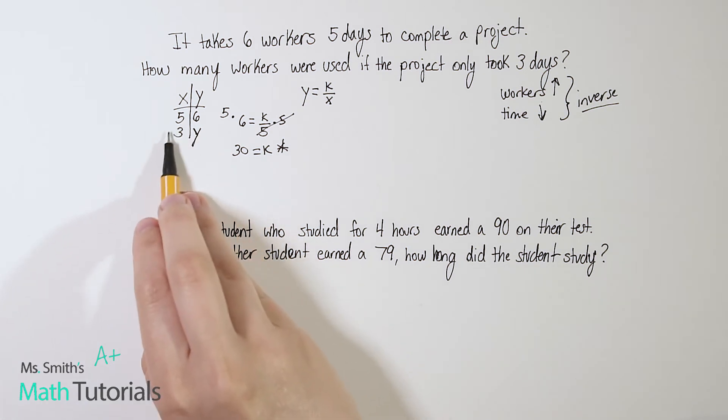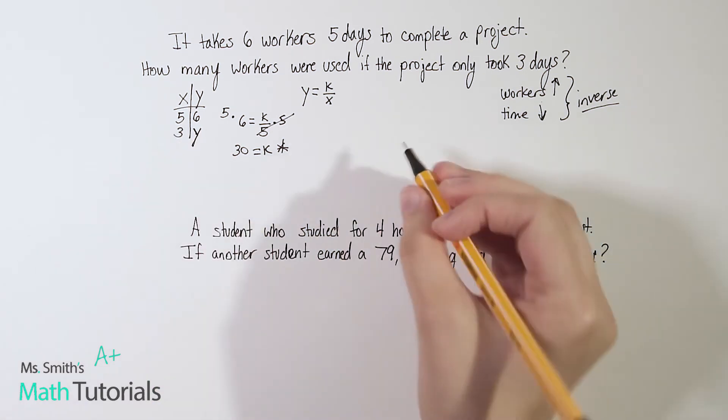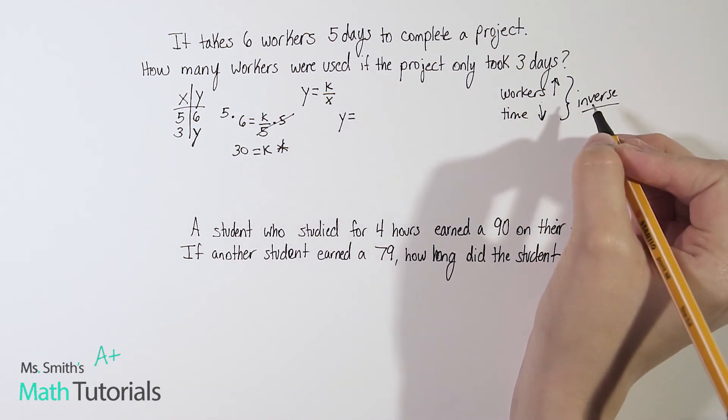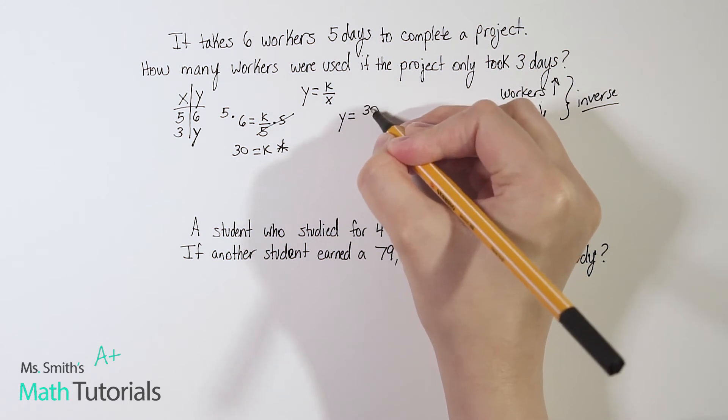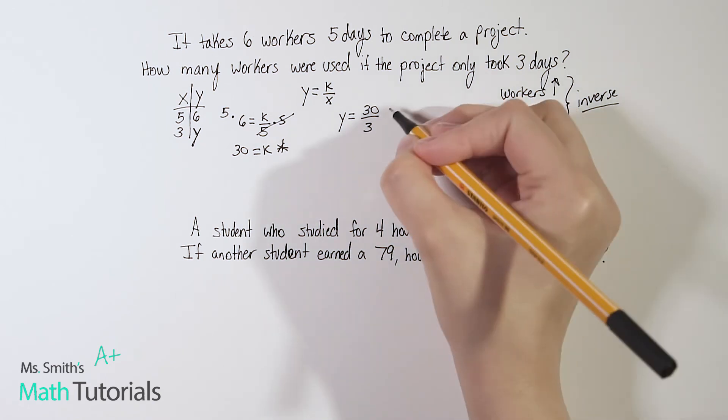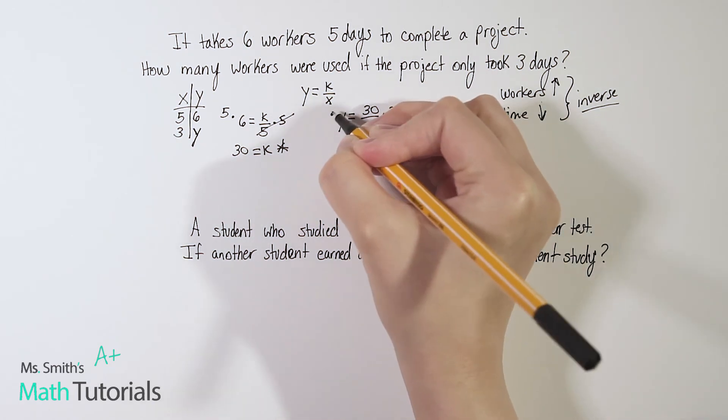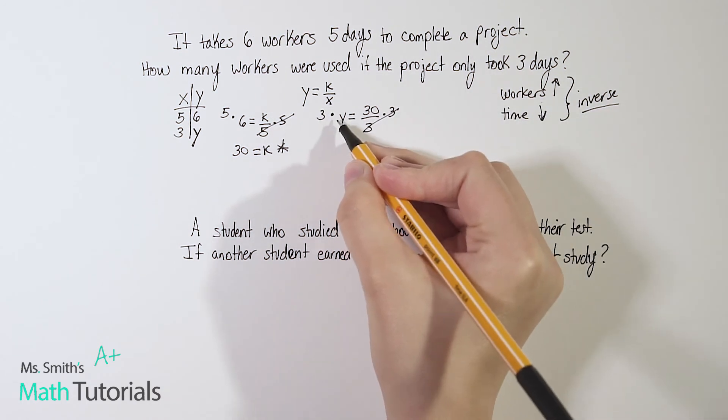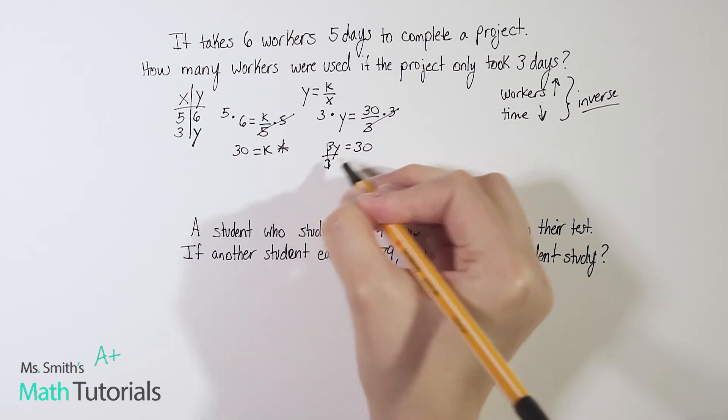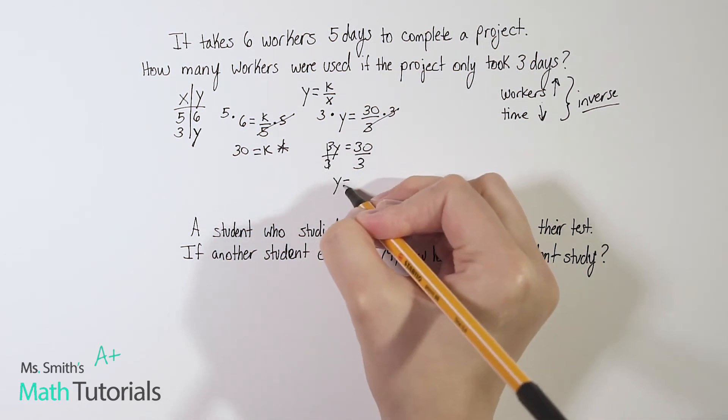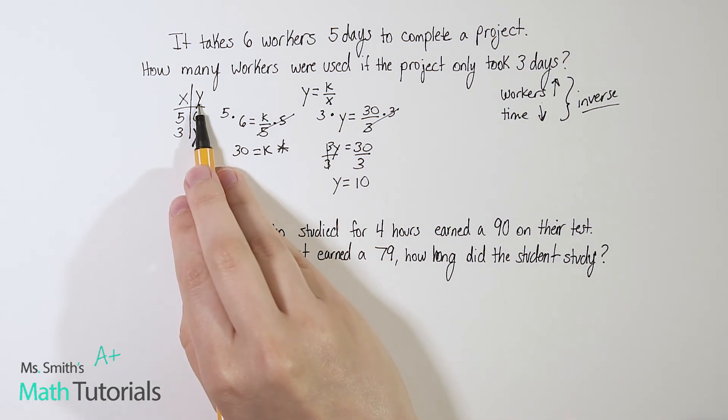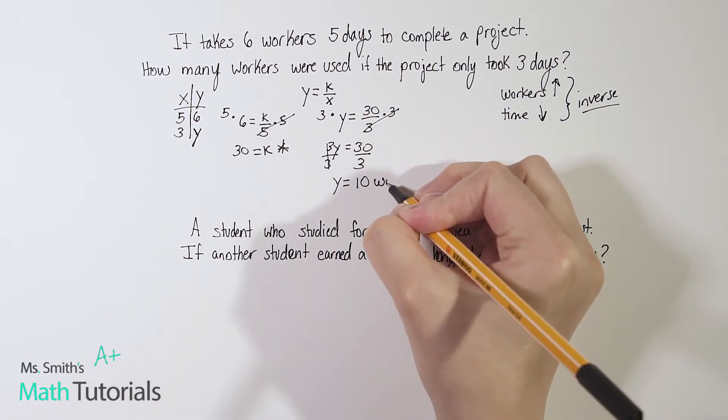So now we can move on to the second point, which is what the question is asking. So for this one, Y is still Y, that's what we're looking for. K, we now know it's 30, and X is three. So we want to always multiply by the denominator. So this three times Y is just three Y equals 30. We want to divide to get Y alone, and Y equals 10. So let's think about what Y was. Y is our workers. In this case, it's going to take 10 workers.